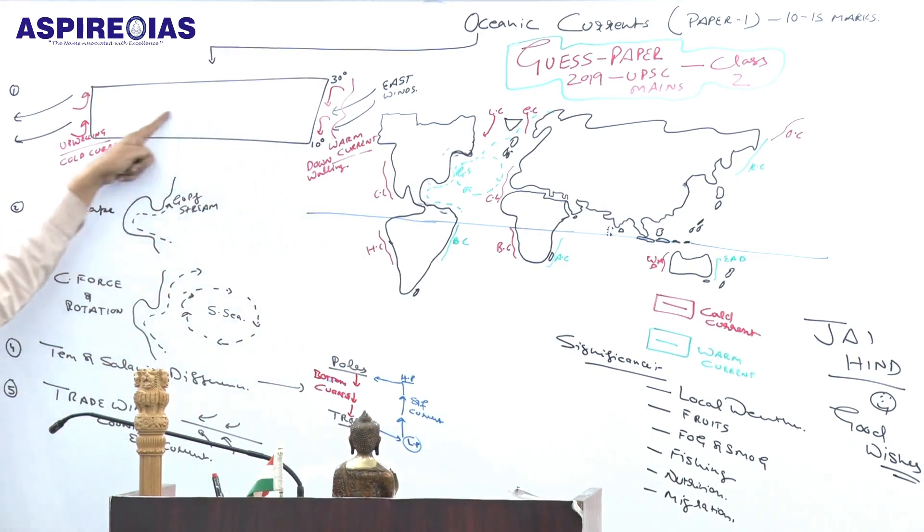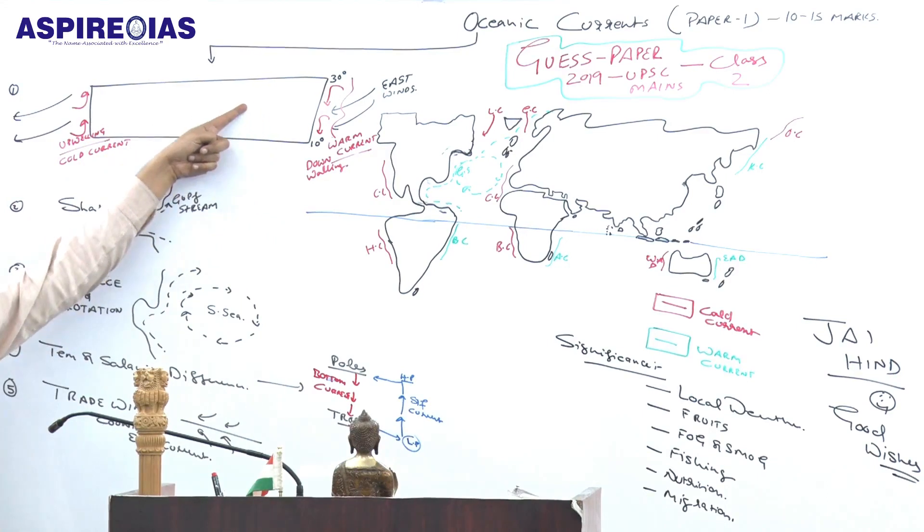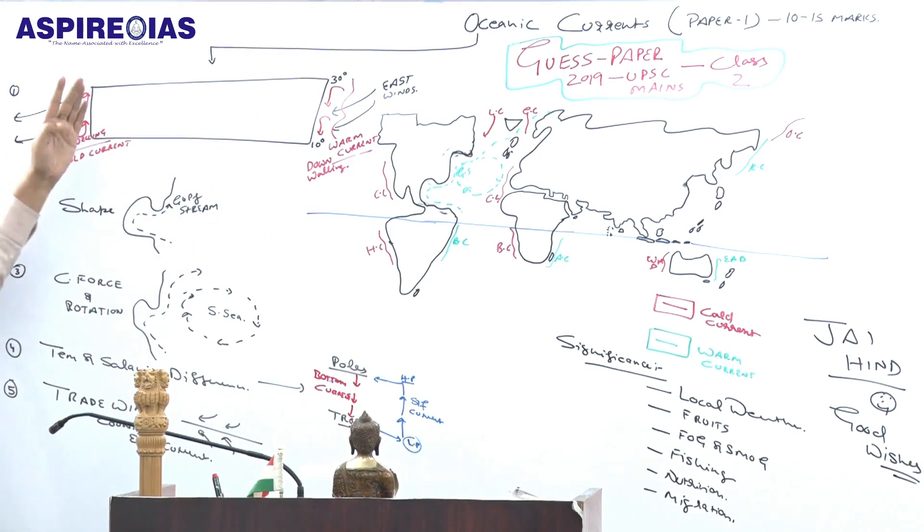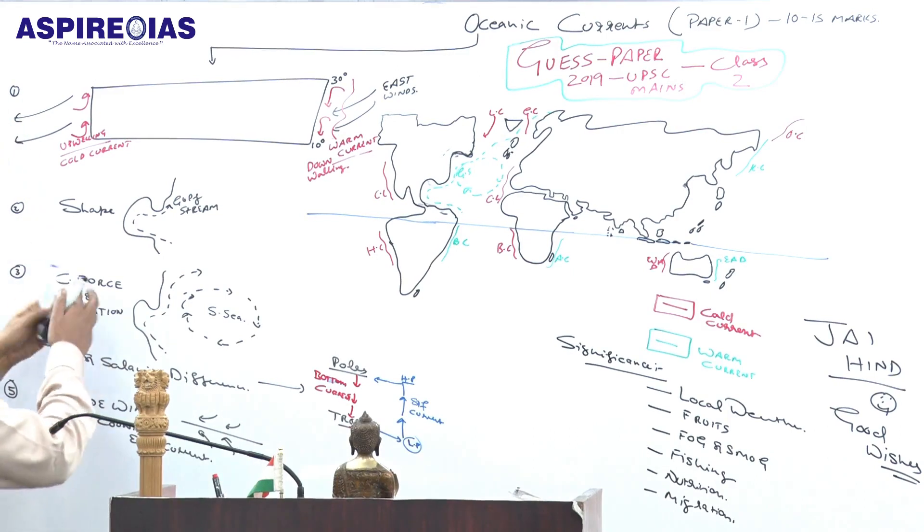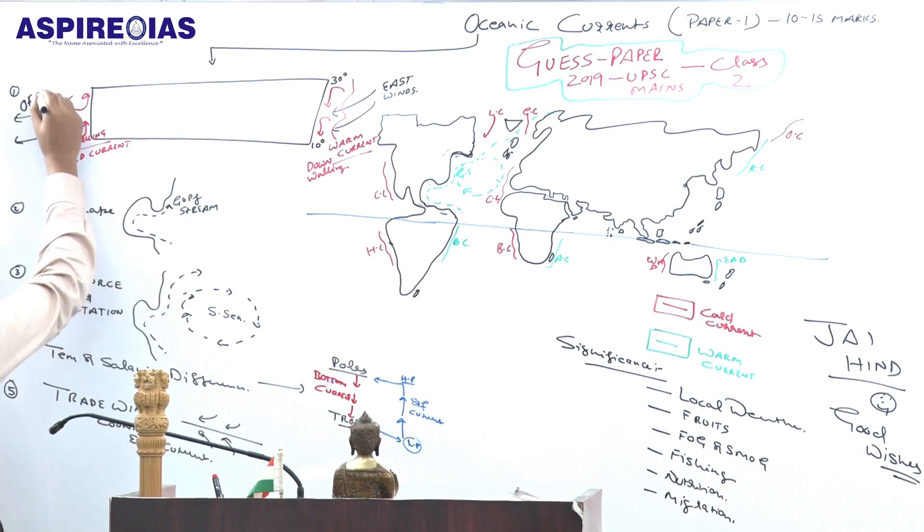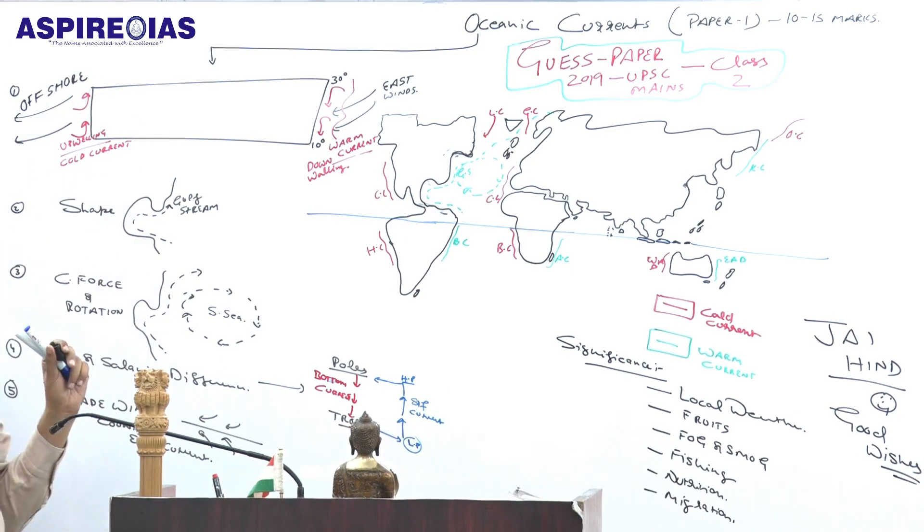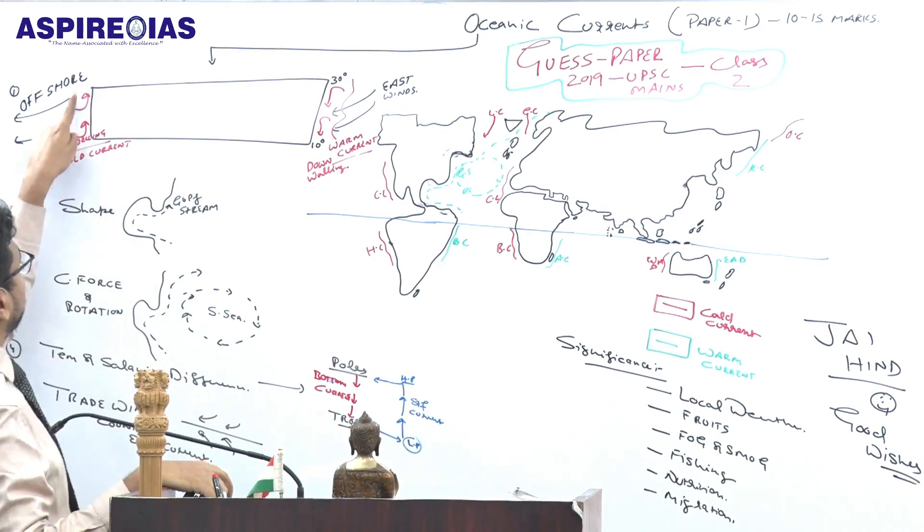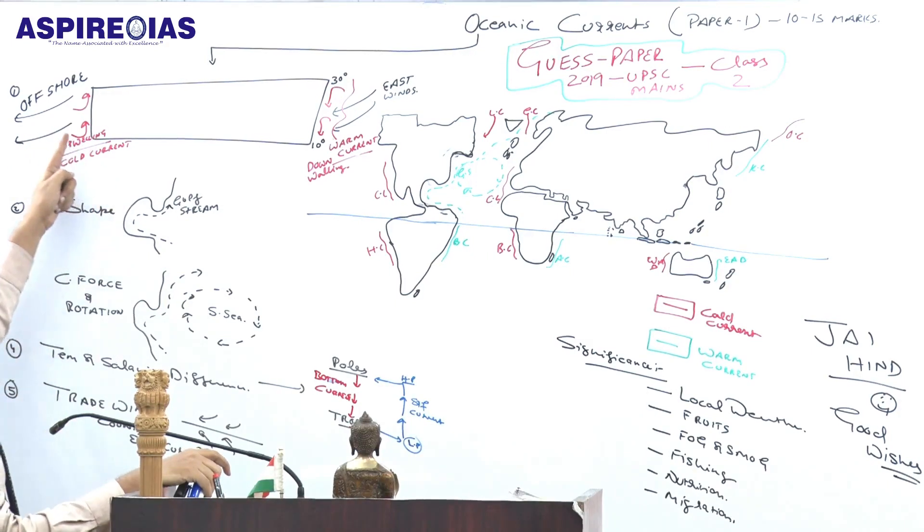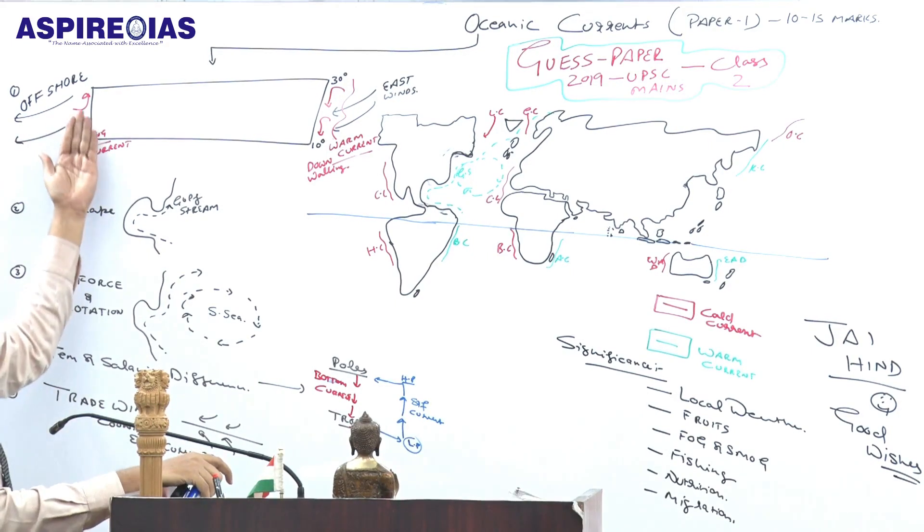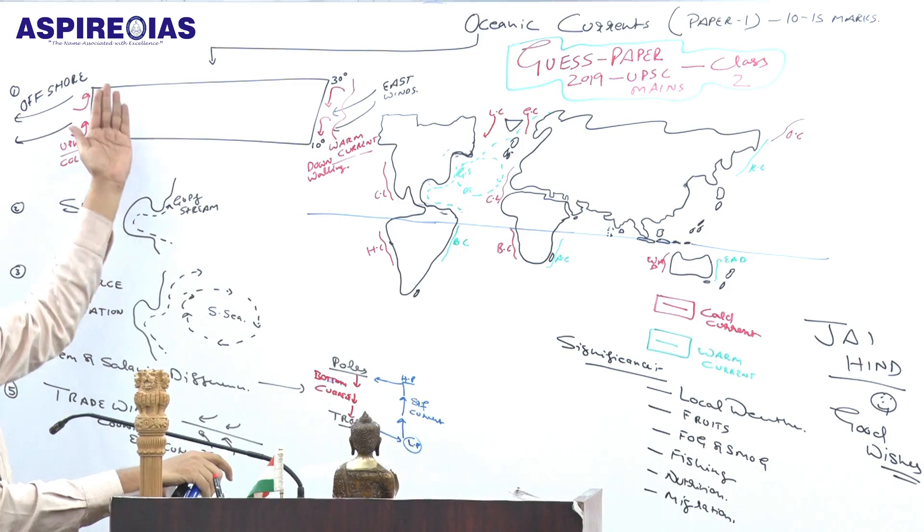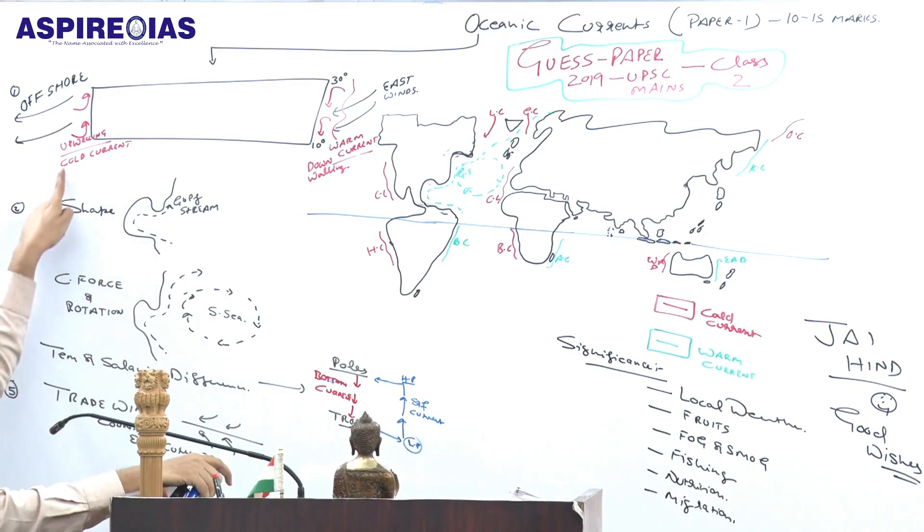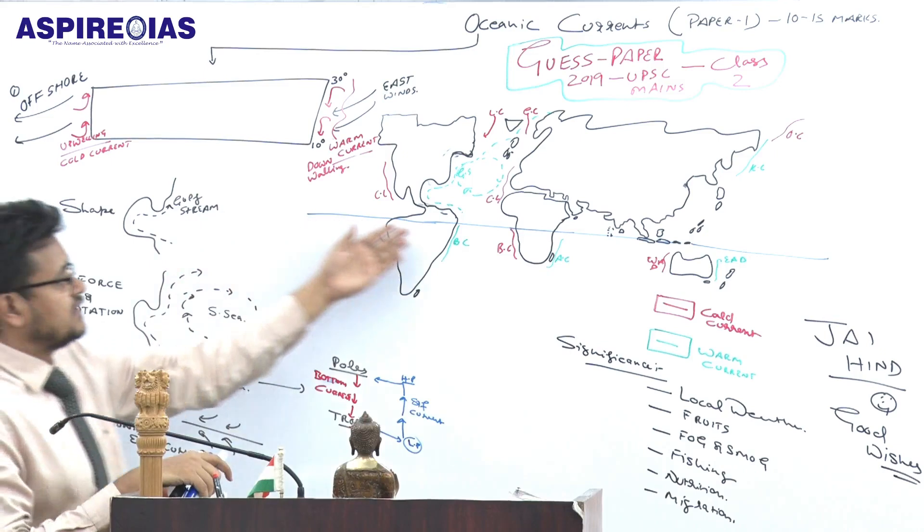When the same winds pass through continents like Africa, Asia, America, on the western side they act as offshore winds. When wind acts as offshore, cold water from the bottom comes up in upwelling zones, resulting in cold current.